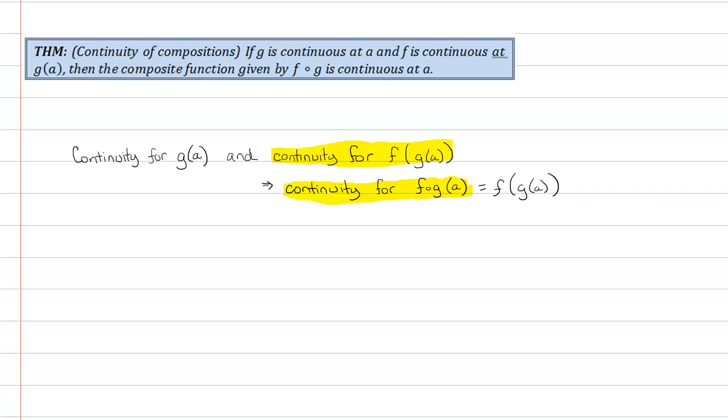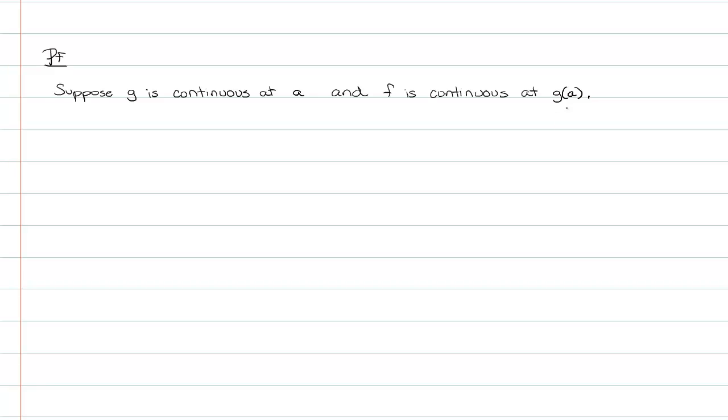If we go back to the theorem itself, remember all proofs start with our suppositions. Our suppositions here are things handed to us that are allowed to be assumed, basically the stuff following the word if. We only get to assume that g is continuous at a and f is continuous at g of a. So that's what we write down. Suppose g is continuous at a and f is continuous at g of a. Well, now that's all I can work with.